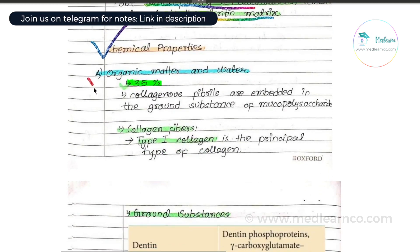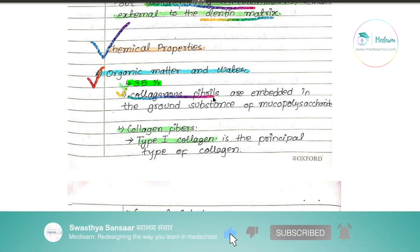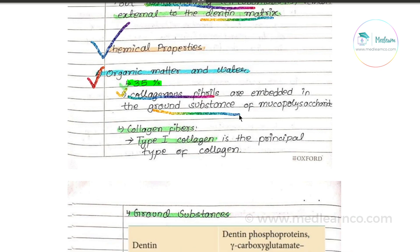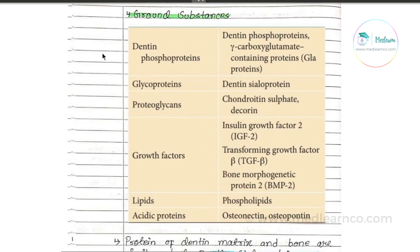The chemical properties: dentin has 35% organic content and 65% inorganic content. The organic content consists of collagen fibers — mainly type 1 collagen — embedded in the ground substance. The ground substance contains dentin phosphoproteins, glycoproteins, proteoglycans, growth factors, lipids, and acid proteins.